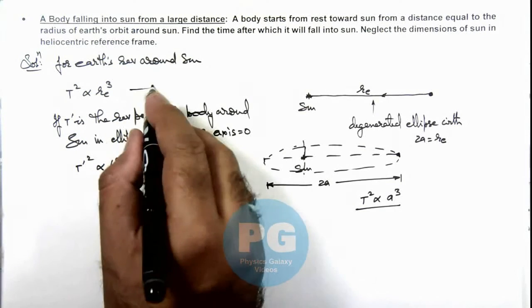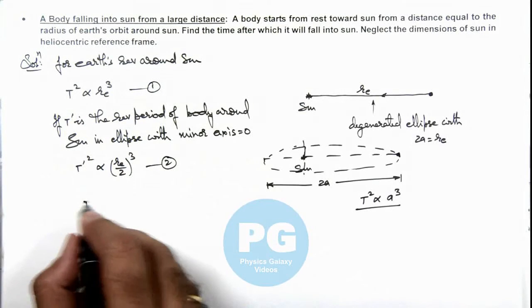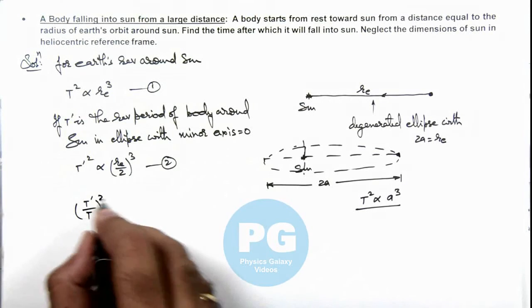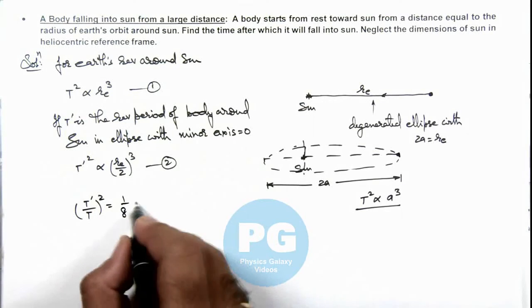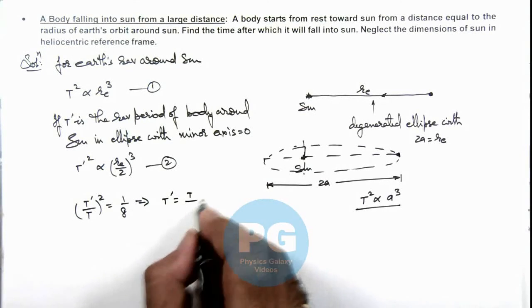So if this is equation 1, this is equation 2. Dividing these two equations we can get t prime upon t whole square is equal to 1 by 8. This implies we get the value of t prime as t by 2 root 2.